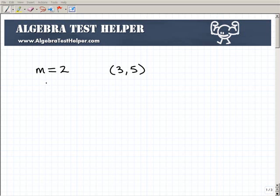So, for example, here, let's say I have a line that has a slope of 2 and also crosses to the point 3, 5. I'd like to know the equation of a line that has those characteristics.